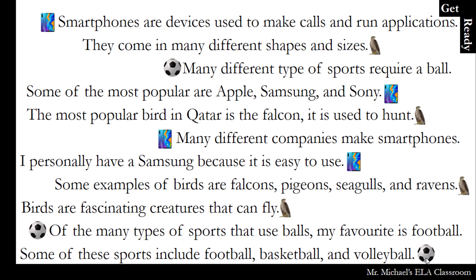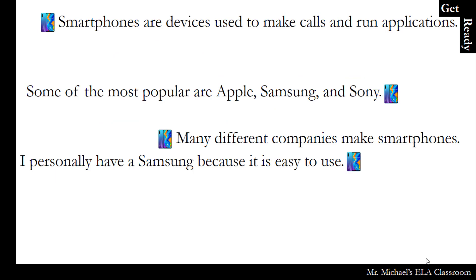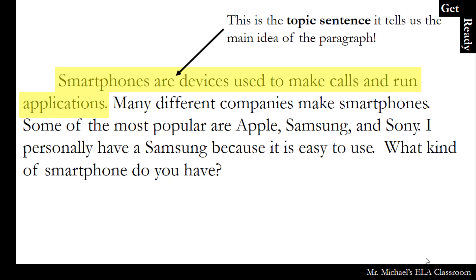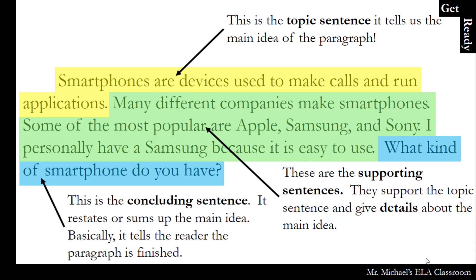So I'm just going to look at the ones about smartphones. First we need to put these sentences in order — first, second, third, and fourth. So here's the paragraph. You'll notice that I indented the paragraph, which means I left some spaces before the first sentence. This paragraph has certain parts: this first sentence is called the topic sentence, and it tells us the main idea of the paragraph. These sentences are called the supporting sentences — they support the topic and give details about the main idea. And the final one is the concluding sentence.